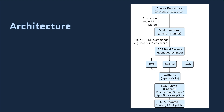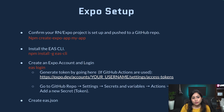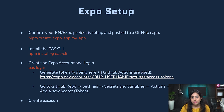OTA updates are a special feature of Expo. Over-the-air updates allow delivering JavaScript or TypeScript code to users without actually publishing a new build to the stores. The use cases might be small UI tweaks or content changes — text or layout — or any minor asset changes like images, fonts, etc.